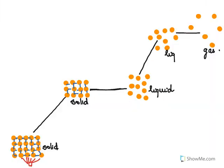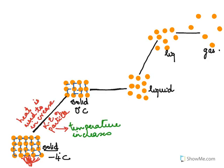Let's explain what happens at the molecular level. At first we have a solid, and we supply heat to it. As we keep supplying heat to the solid, the temperature at minus 4 degrees Celsius keeps increasing to 0 degrees Celsius. The heat supplied is used to increase the temperature, so the temperature increases from minus 4 to 0 degrees Celsius and the kinetic energy of the particles also increases.